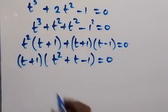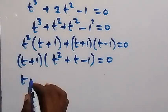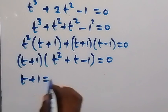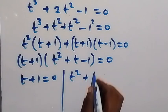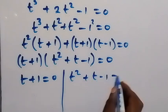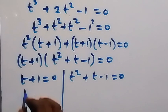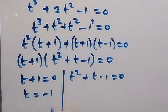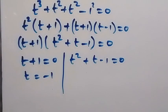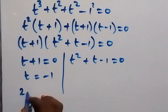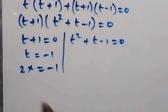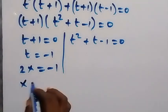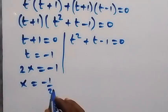And then in the next step we have t plus 1 equals to 0, or we have t squared plus t minus 1 equals to 0. So on this side we have t equals to minus 1. And since t is represented as 2x, we can say 2x equals to minus 1, so x equals to minus 1 over 2. So we have one of the values of x.